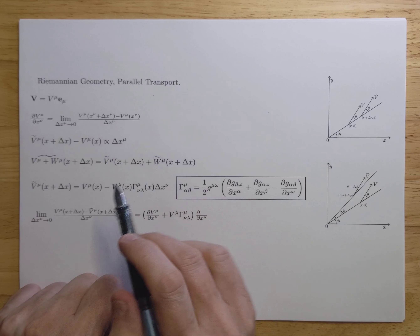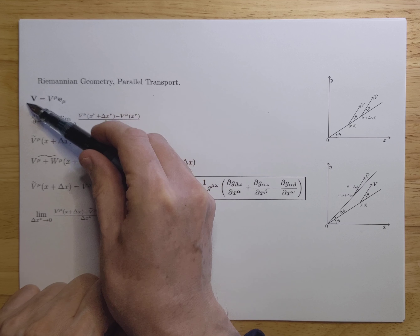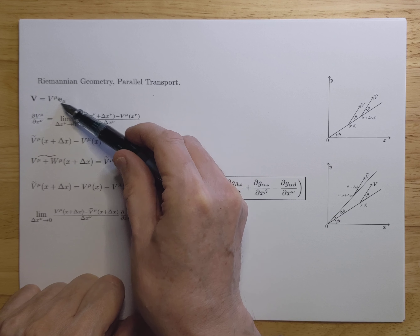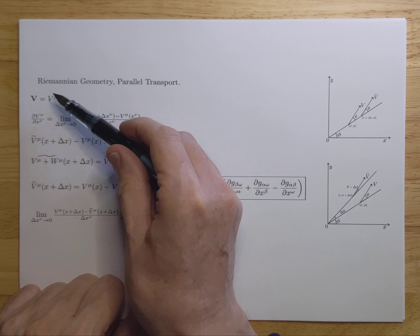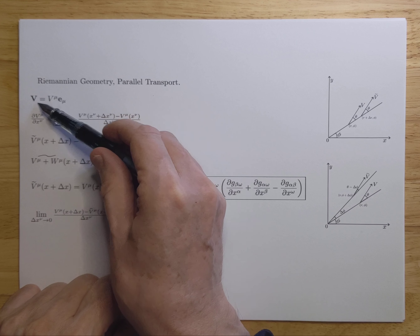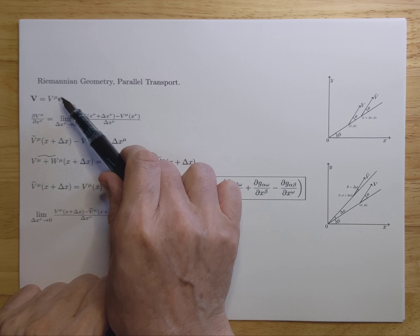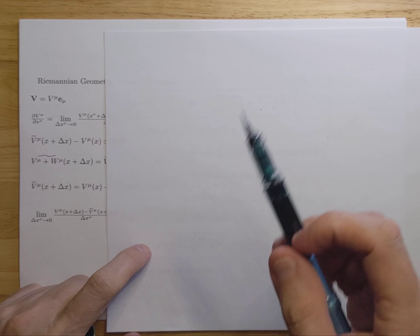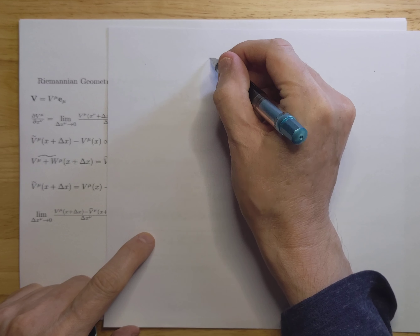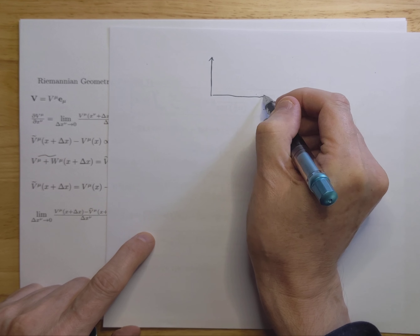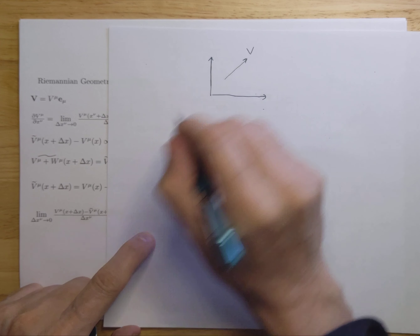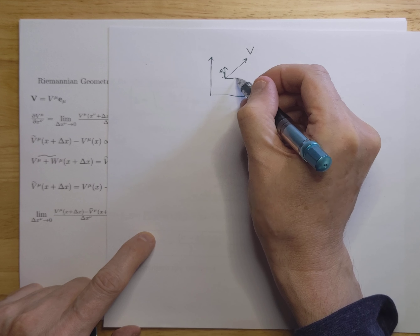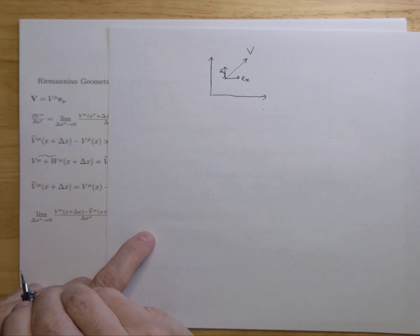If you move vectors — a vector can be defined with components v^mu and basis vectors e_mu — and if you have this vector in normal Euclidean space, you can move this vector at will and nothing will change. If you have a vector and you move it in Euclidean space, you have your e_y basis vectors and your e_x basis vector.